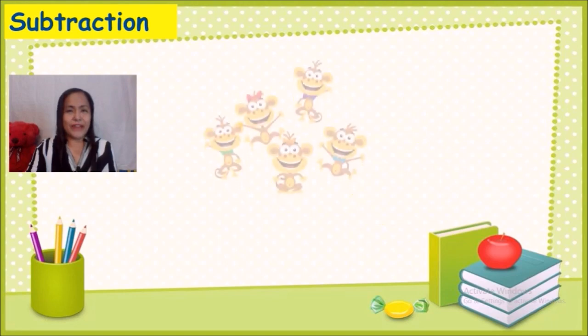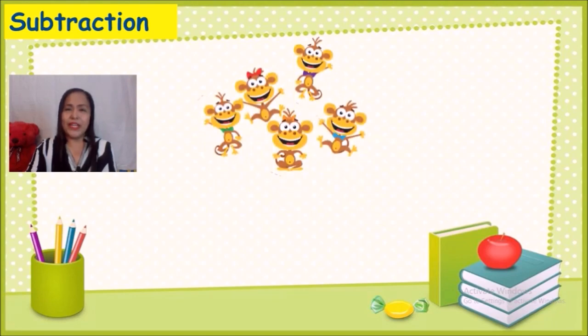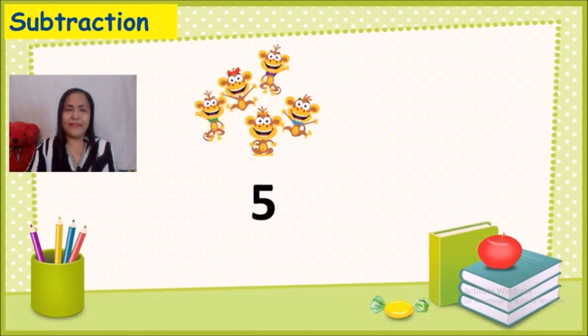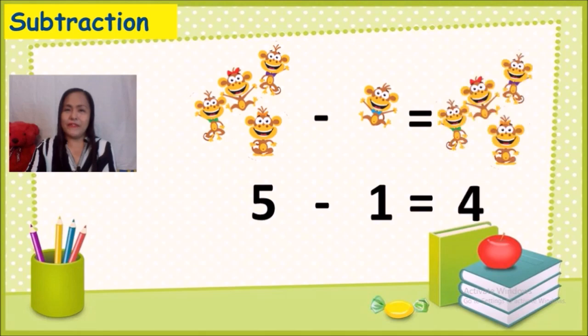So there were five of them, and then one of them fell out of the bed. So how many monkeys were left jumping on the bed? Correct! There are now four little monkeys jumping on the bed. It is also the same as five minus one equals four.